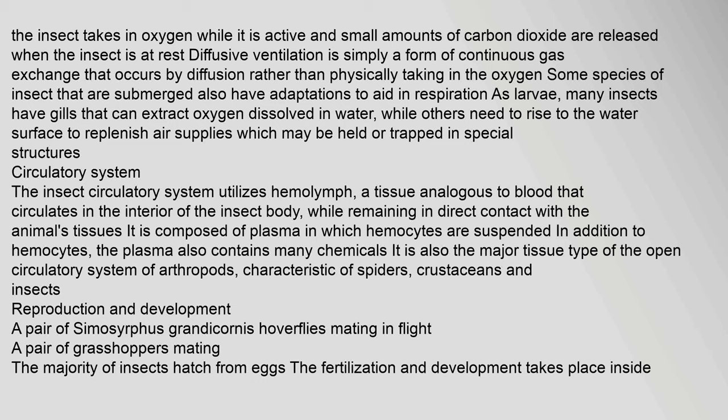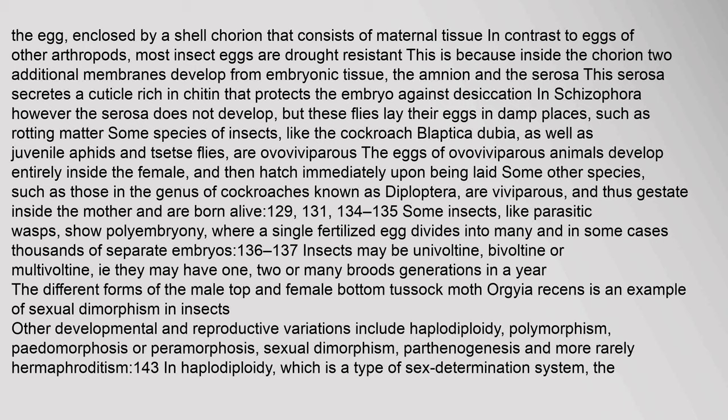The majority of insects hatch from eggs; fertilization and development take place inside the egg, enclosed by a shell (chorion) that consists of maternal tissue. Most insect eggs are drought resistant because inside the chorion two additional membranes develop from embryonic tissue — the amnion and the serosa — which secretes a cuticle rich in chitin that protects the embryo against desiccation. Some species of insects, like the cockroach Blaptica dubia, as well as juvenile aphids and tsetse flies, are ovoviviparous. Some species such as those in the genus Diploptera are viviparous and are born alive. Some insects, like parasitic wasps, show polyembryony, where a single fertilized egg divides into many — in some cases thousands — of separate embryos.